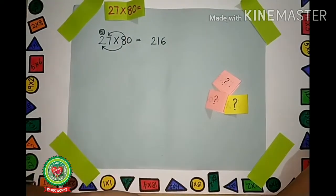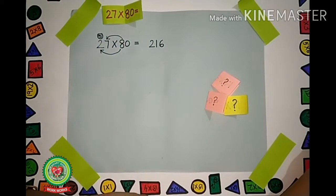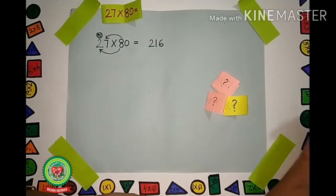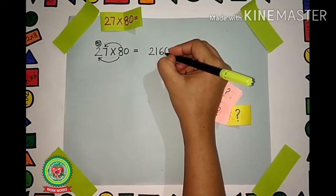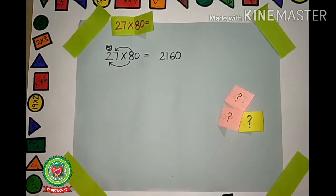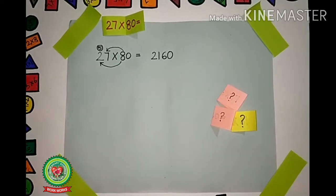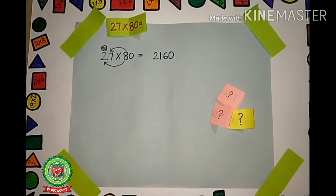Now remove your finger. What can you see? There is a 0. So write the 0 over here. Our answer is 2160.